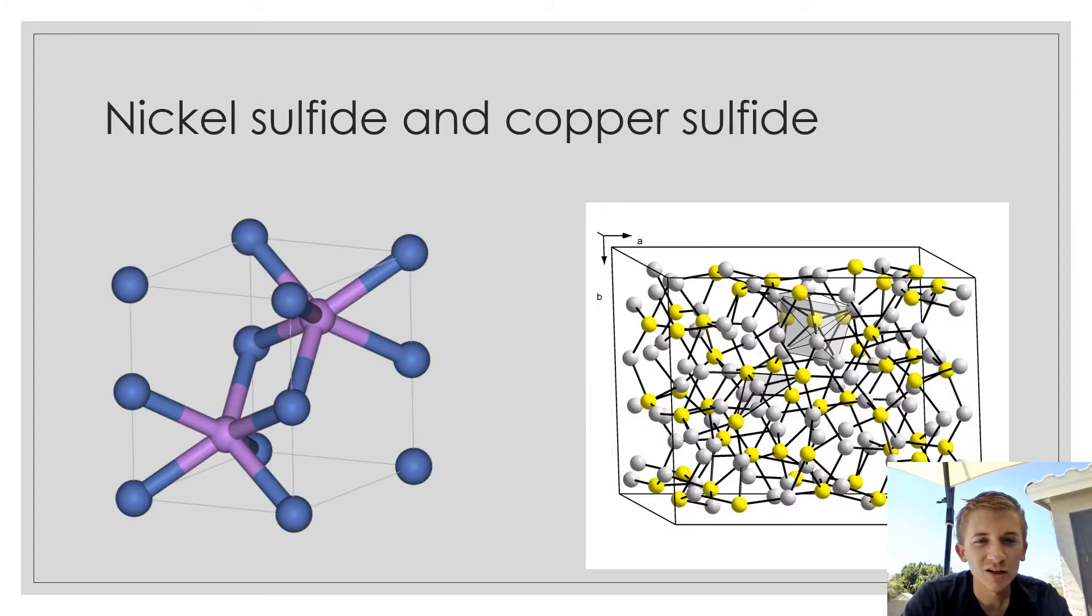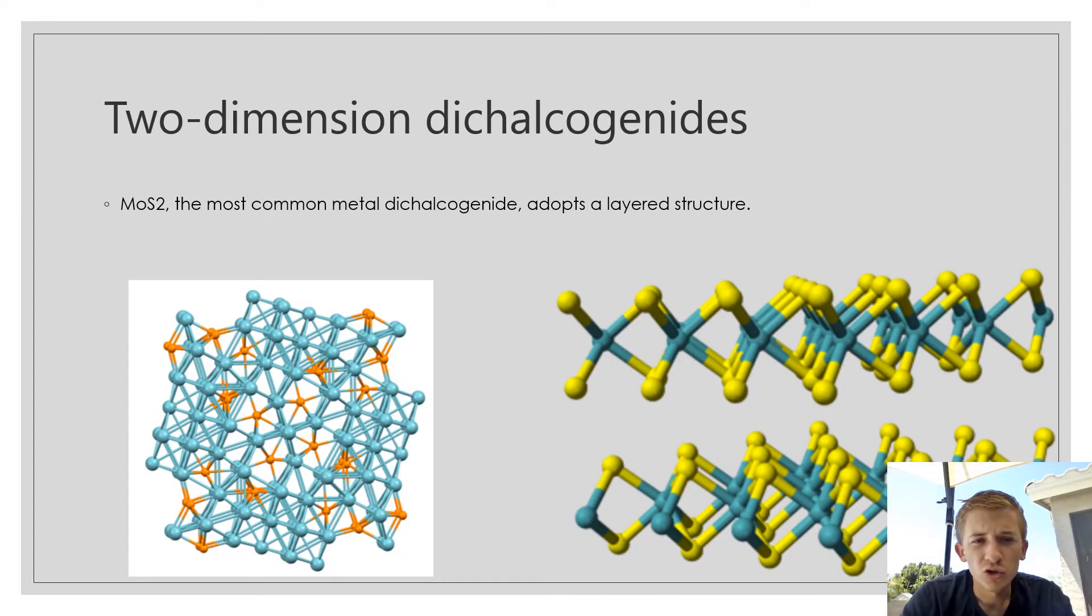To get a better idea of what kind of structures you're looking at here, on the right is the copper sulfide and the left is the nickel sulfide. These are the two-dimensional dichalcogenides. MoS2 is the most common dichalcogenide and it adopts a layered structure, as you see on the right here, and on the left is the monochalcogenide.